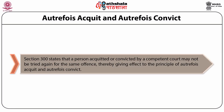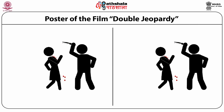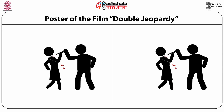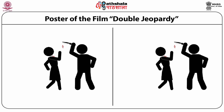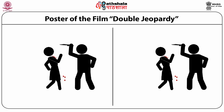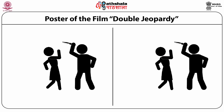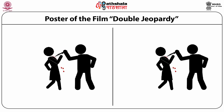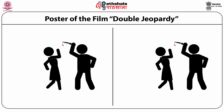Therefore, Section 300 of the Code of Criminal Procedure states that a person acquitted or convicted by a competent court may not be tried again for the same offence, thereby giving effect to the principle of autrefois acquit and autrefois convict. Here you see a poster of the film Double Jeopardy, somewhat of a cult hit in the 1990s, which dealt with the story of a woman who is convicted of murdering her husband and actually finds out that her husband framed her for the murder and was very much alive while she was serving her sentence. It does deal with double jeopardy, so do watch it — the film stars Tommy Lee Jones.